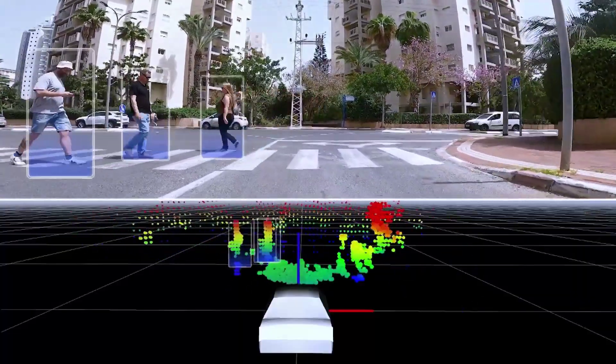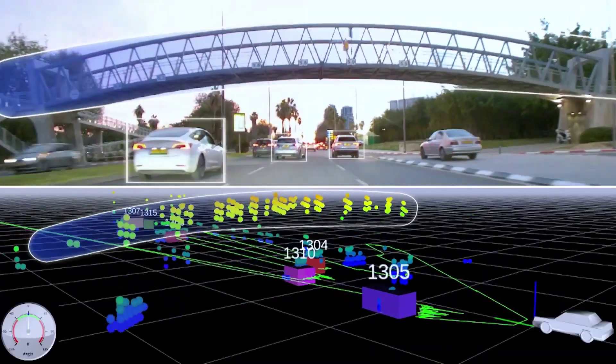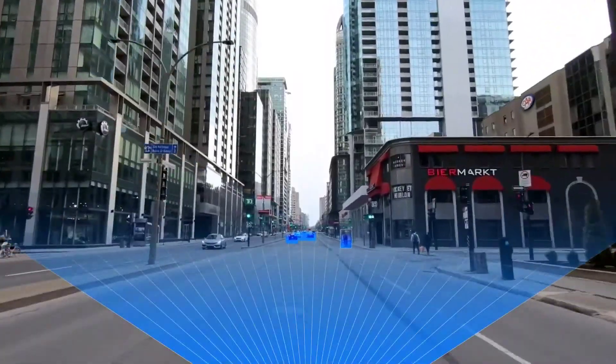Robot senses are tingling thanks to Arbe Robotics radar, chipsets, and perception algorithms offering high-resolution sensing that operate in all weather and lighting conditions.